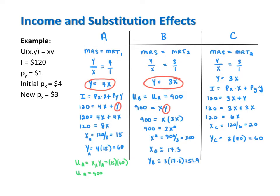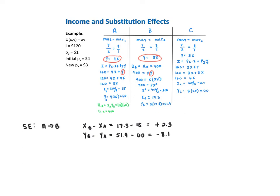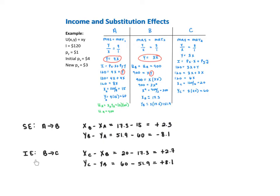With bundles A, B, and C now calculated, we can compute the total, substitution, and income effects of this price decrease. In moving from A to B, the substitution effect pulls consumption of good X up by 2.3 units, and pulls good Y down by 8.1 units. Because the price of X went down, the consumer substituted towards good X and away from good Y. The income effect from B to C pulls consumption of good X up by 2.7 units and pulls consumption of good Y up by 8.1 units.